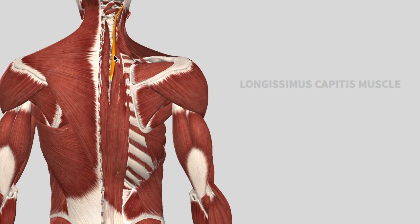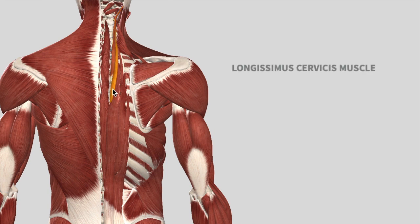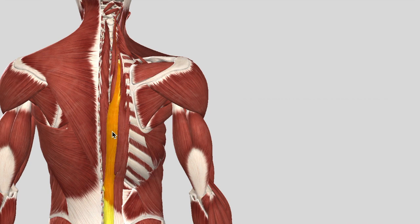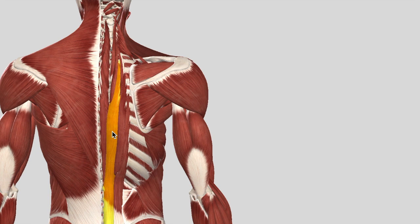Further lateral but still in the middle, we have longissimus capitis, then further down longissimus cervicis, and then longissimus thoracis. As you go down, you can see that it's moving laterally and the muscles are getting bigger and thicker. So the longissimus family, which is deeper, has three components.